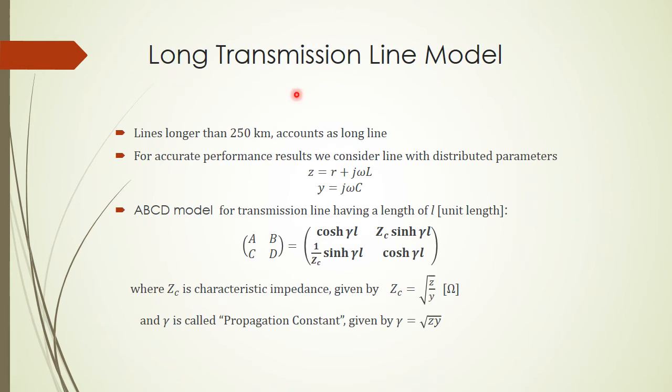In case of long transmission line, we cannot lump the capacitance into any equivalent capacitor anymore. We need to consider the line with distributed parameters Z equals R plus j omega L and Y equals j omega C as per unit length. After doing the calculation as shown in the textbook and lecture notes, we can derive the ABCD model for the transmission line having a length of L as: cosh gamma L, Zc sinh gamma L, 1 over Zc sinh gamma L, cosh gamma L.